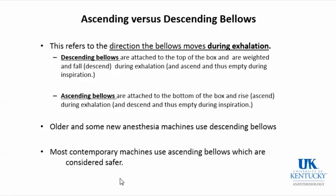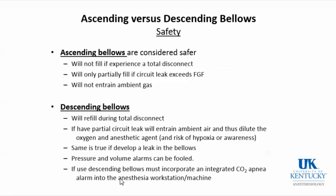Most modern machines use ascending bellows because they're considered safer, though there is a recurrence of some descending bellows. Ascending bellows are considered safer because they won't fill if you have a disconnect, they will progressively fill less with a leak, and they won't entrain ambient air. Conversely, descending bellows will refill even with a total disconnect and can entrain air.